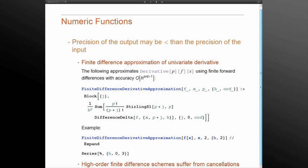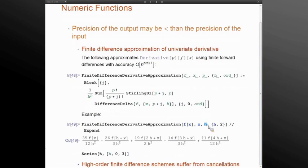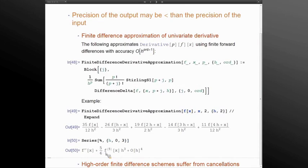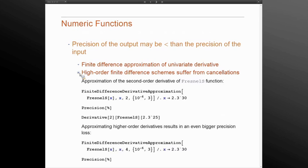Precision of the output in the numeric function may be well smaller than the precision of the input. To consider such an example, we will look at a finite difference approximation for a derivative. This particular code constructs an approximation using a forward difference with step h and will construct an approximation of the derivative of order p of a function f of x. We will take a black box function f of x and construct an approximation of order 2. When we use the symbolic nature of Mathematica to verify that, you see that indeed expansion gives you a second-order derivative and the error term here is h to the 3rd. This is an accurate representation.